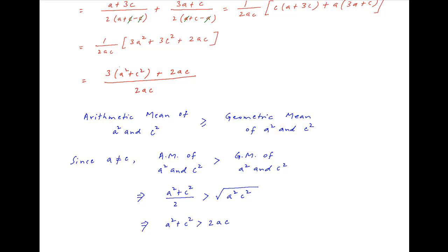Going back to the expression derived above, we have proved that in the numerator a² + c² is greater than 2ac. Therefore this whole expression is greater than 3 × (2ac + 2ac) / (2ac).